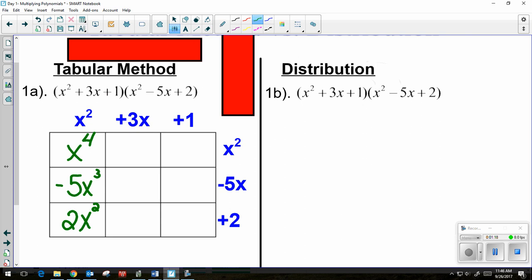Then I go to the 3x. 3x times x squared is 3x to the third. 3x times negative 5x is negative 15x squared. And 3x times 2 is 6x.